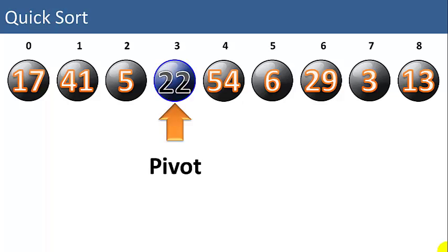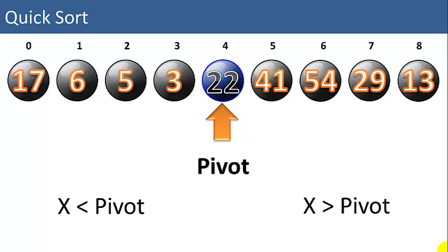The pivot is an item that is used to compare every other item in the list to. So we'll compare every item to 22 in this case. We'll move all items that are smaller than the pivot to the left of the pivot, and all items that are larger than the pivot to the right of the pivot. As you can see here, all items to the left are less than the pivot. All items to the right are larger than the pivot.